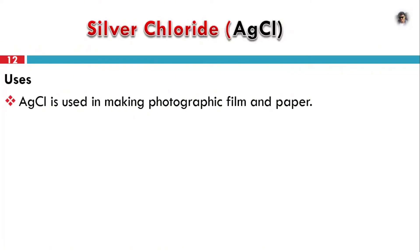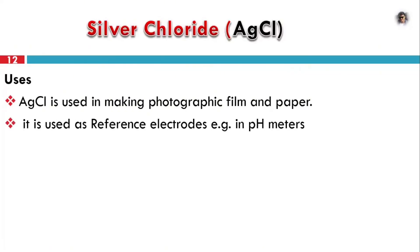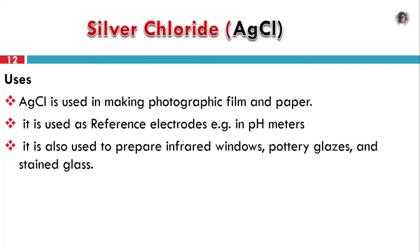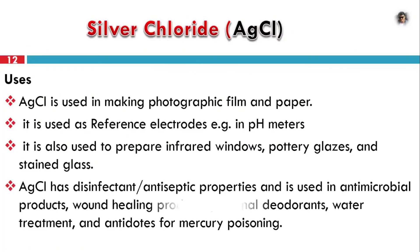AgCl is used in making photographic film and paper. It is also used in preparing infrared windows, pottery glazes, and stained glass. AgCl has disinfectant and antiseptic properties; it is used in antimicrobial applications, personal care products such as deodorants, and water treatment as a disinfectant or antiseptic.